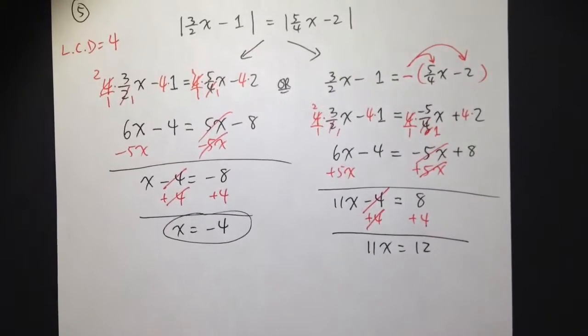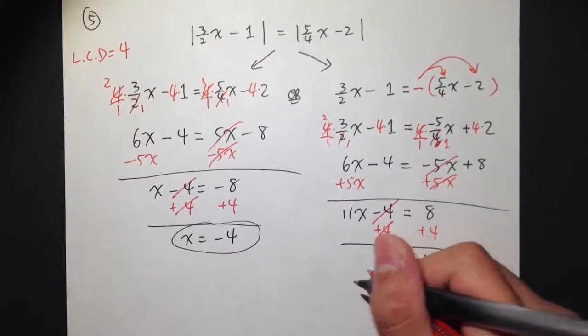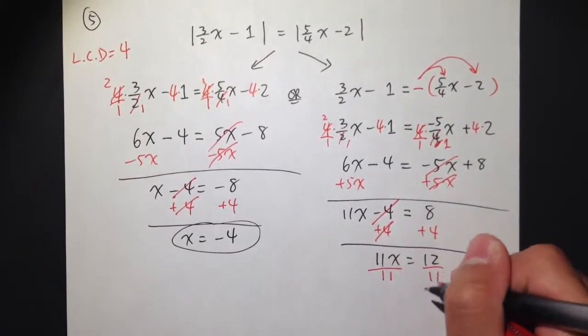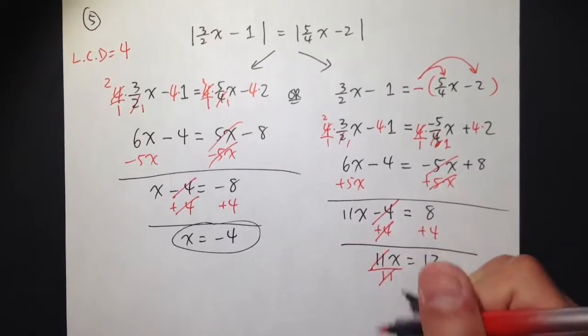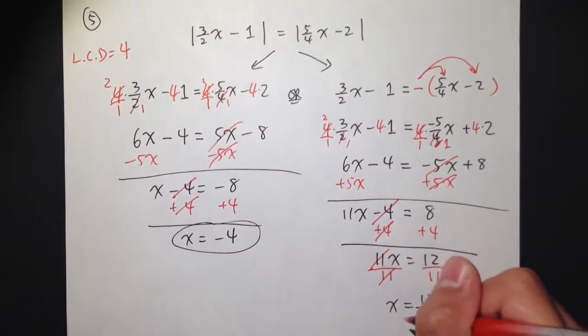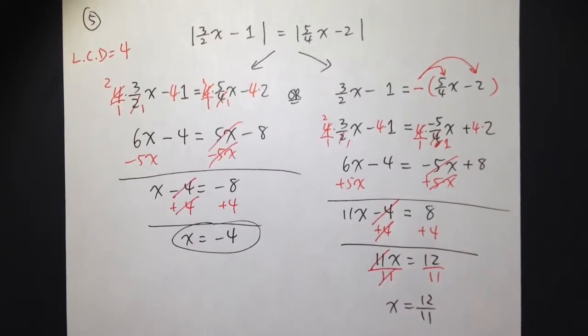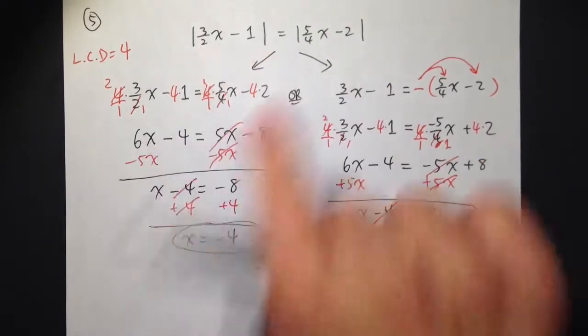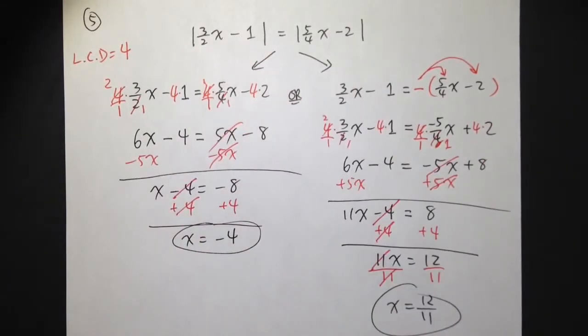So, 11 times x is equal to 12. Divide both sides by 11. X is equal to 12 over 11. We cannot simplify these fractions anymore. So, two answers, negative 4 right here, and positive 12 over 11. I have two answers for this equation. Thank you.